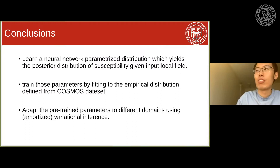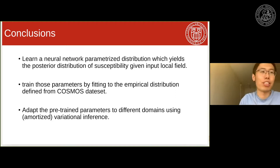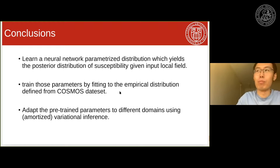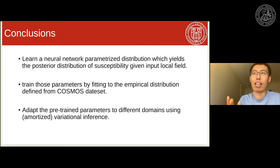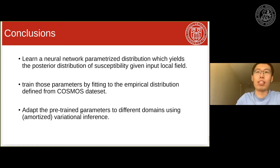In conclusion, in this work we learn a neural network parameterized distribution that can generate the posterior distribution of susceptibility given the input local field. We train these parameters by fitting the empirical distribution from the COSMOS dataset — i.e., the negative log likelihood — and we adapt the COSMOS pre-trained network to different domains using either subject-specific or amortized variational inference.